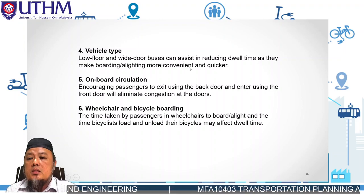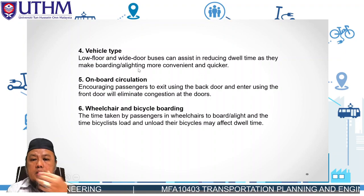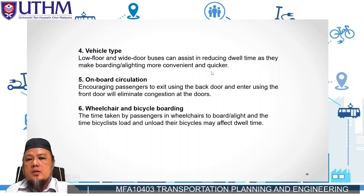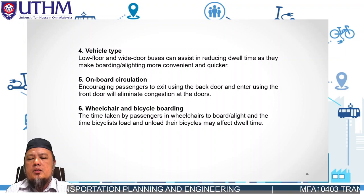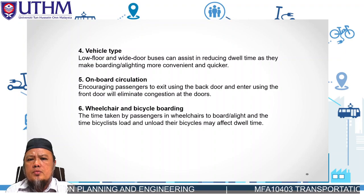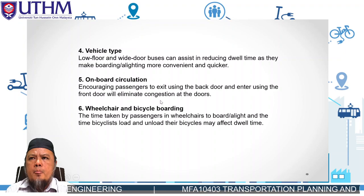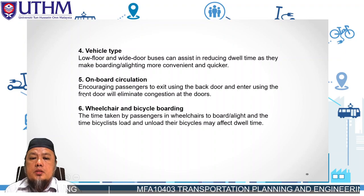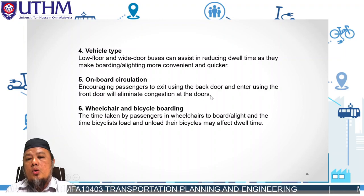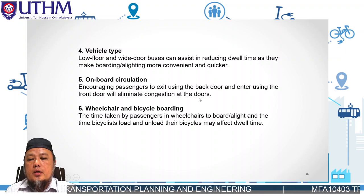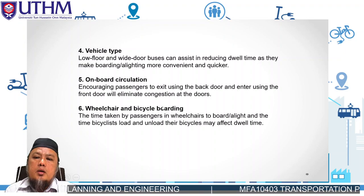Sometimes the vehicle floor level doesn't align with the stop platform, which makes it harder for passengers to board, especially those with luggage or wheelchair users. The fifth factor is onboard circulation — encouraging passengers to exit through the back door and enter through the front door eliminates congestion at the door. It is good practice to use the front door for boarding and the rear door for alighting.